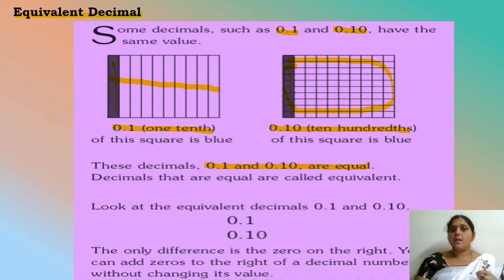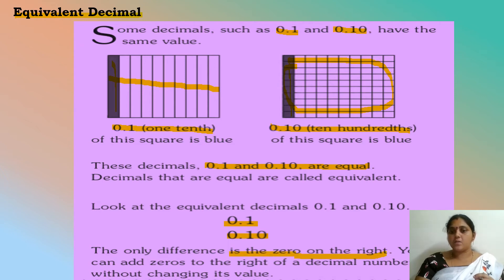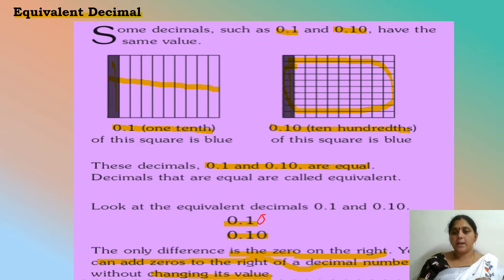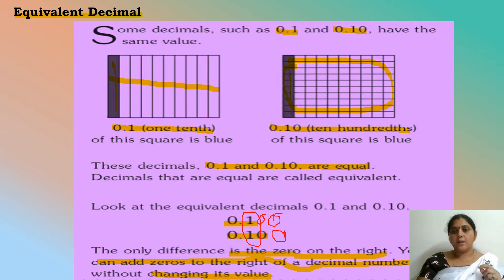How are these equal? Because if we put a 0 after the 1, the value of the number does not change. The only difference between 0.1 and 0.10 is the 0 on the right. You can add zeros to the right of a decimal number without changing its value — just put a 0 after the 1. These two numbers become equivalent decimals.